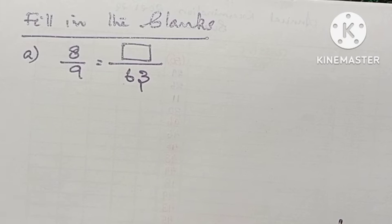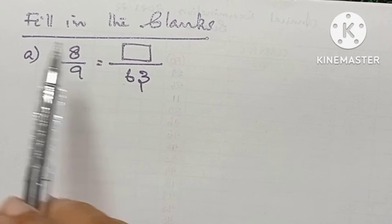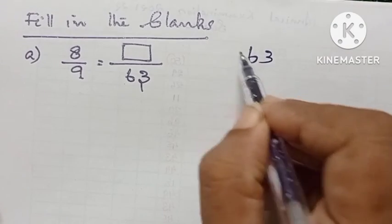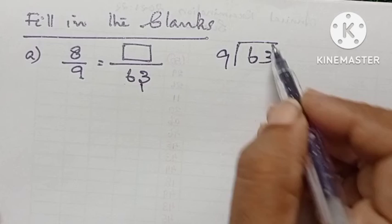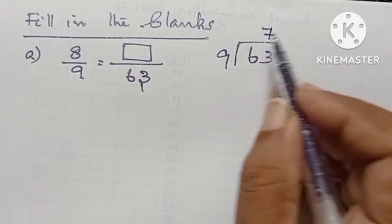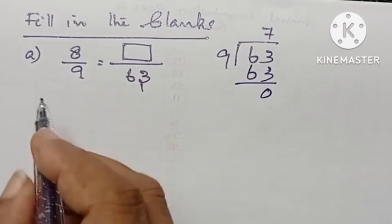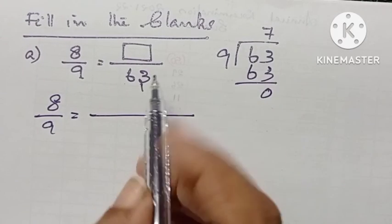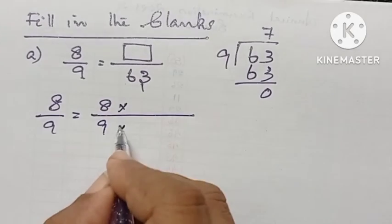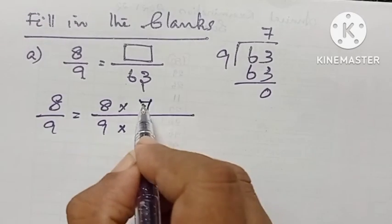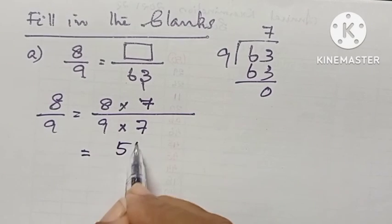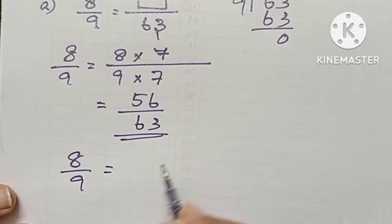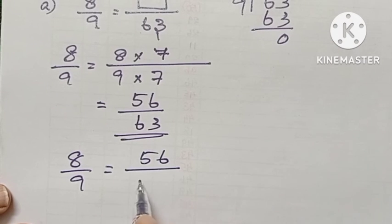Using the same method for this type of question — fill in the blanks: 8 by 9 equals dash divided by 63. Divide 63 by 9, which equals 7. Seven nines are 63. Therefore, writing 8 by 9 and multiplying both numerator and denominator by 7: 9 into 7 equals 63, and 8 into 7 equals 56. The answer is 8 by 9 equals 56 divided by 63.